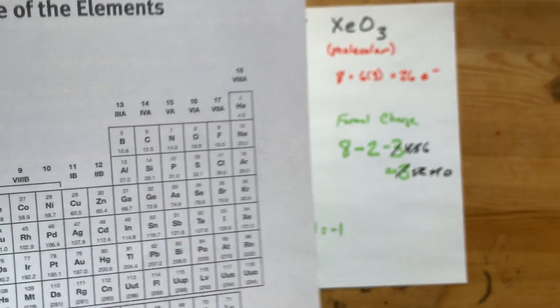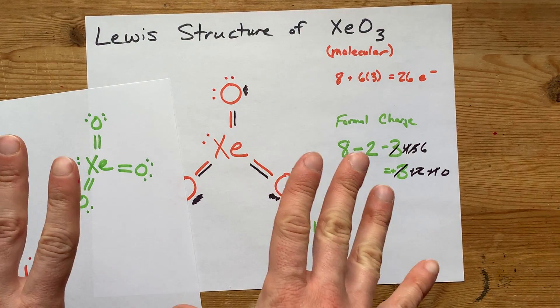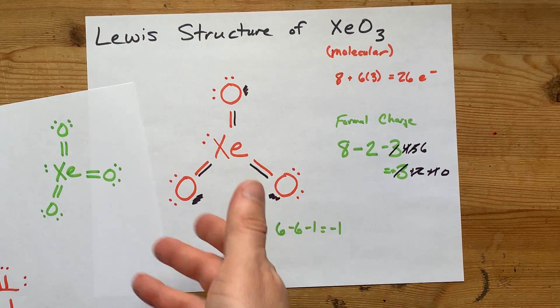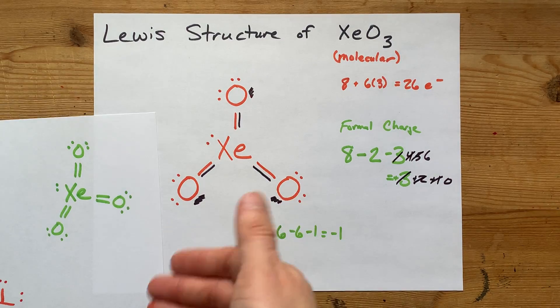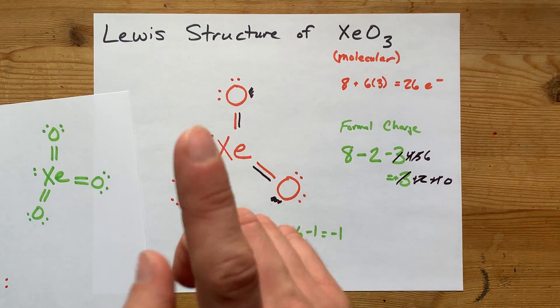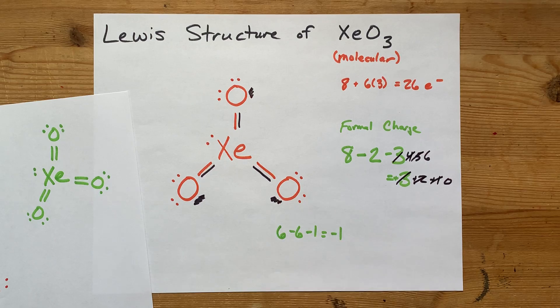Basically, everything from phosphorus onward is allowed to have an expanded octet for electronic configuration reasons that in Ontario, in Canada, you don't learn until like grade 12 or something. Anyway, you're just going to have to trust that this is the true Lewis structure for XeO3. I'm proud of you for making it this far and learning about all the little intricacies going on here.